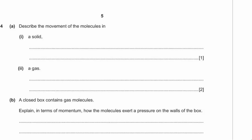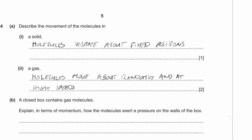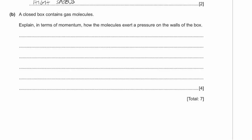Question 4. Describe the movement of molecules in a solid: in a solid the molecules vibrate about fixed positions. In a gas: the molecules move about randomly and at high speeds. A closed box contains gas molecules — explain in terms of momentum how the molecules exert pressure on the walls of the box. Let's use a technique for long-answer questions: something happens, which has an effect, which means, therefore...